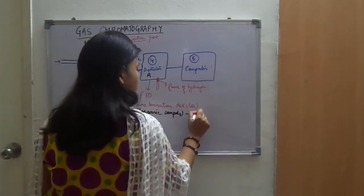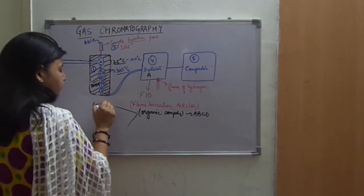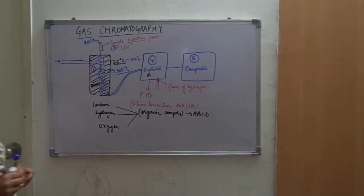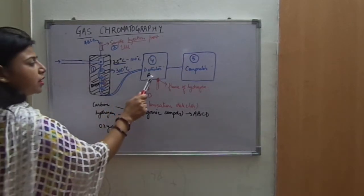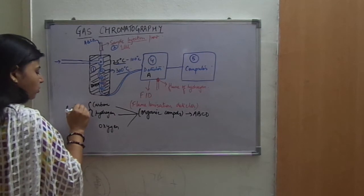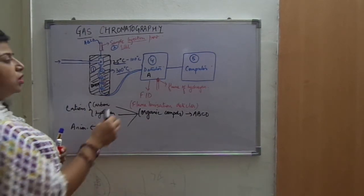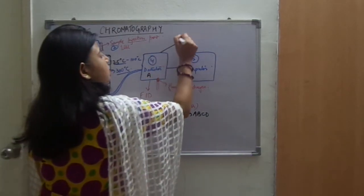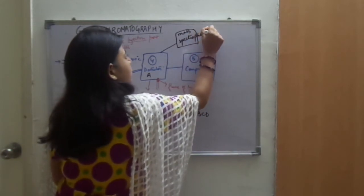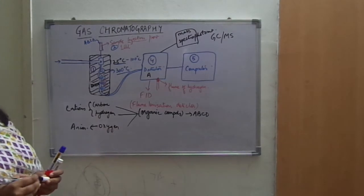If the sample components A, B, C, D are organic compounds, we know that all organic compounds are made up of carbon, hydrogen, and oxygen. If A comes into the detector, it may be made up of carbon, hydrogen, and oxygen. Depending upon the amount of ionic species — the charged species — you can find out what this compound is. Sometimes these detectors are connected to a mass spectrophotometer, and the technique is known as GC-MS: gas chromatography with mass spectrophotometry. The mass spectrophotometer further detects exactly what each sample component is made of.